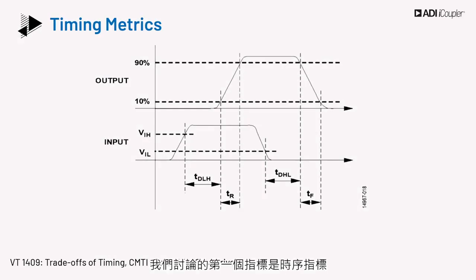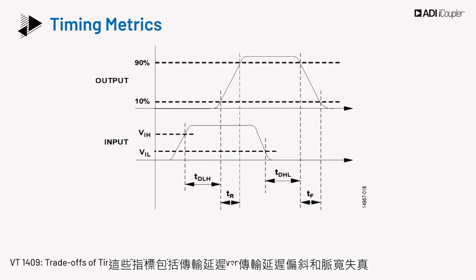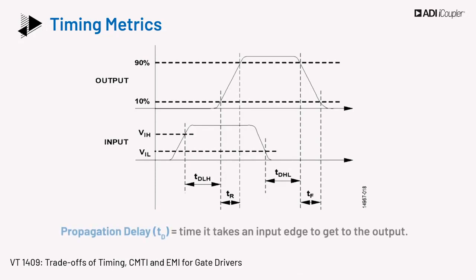The first metrics we will discuss are the timing metrics. These include propagation delay, skew, and pulse width distortion. These metrics affect the system response and control.